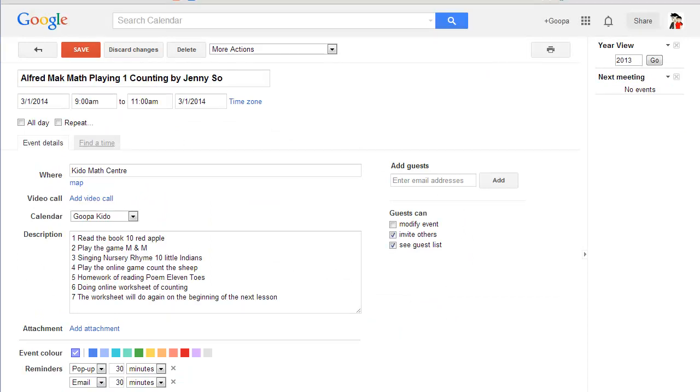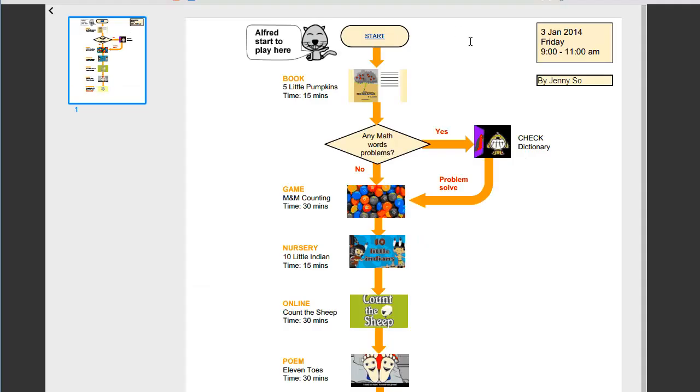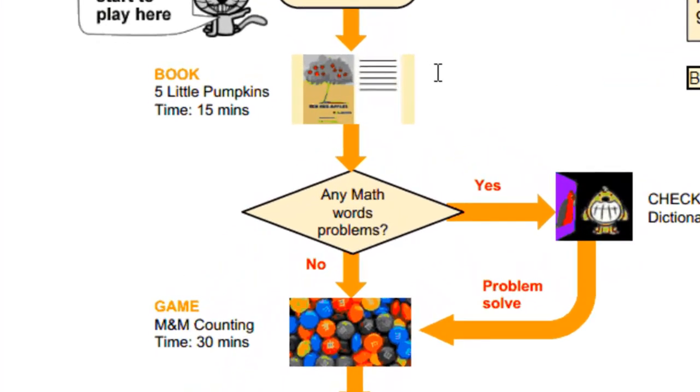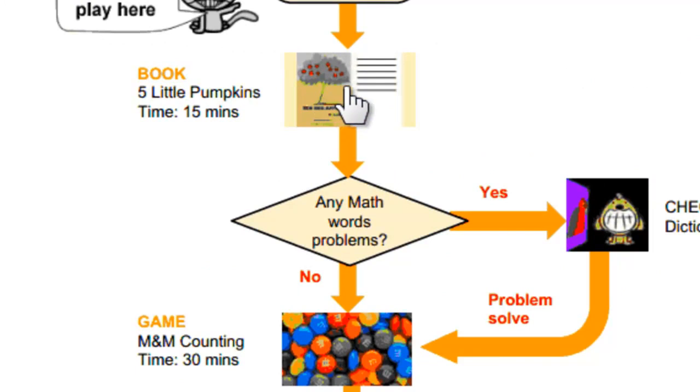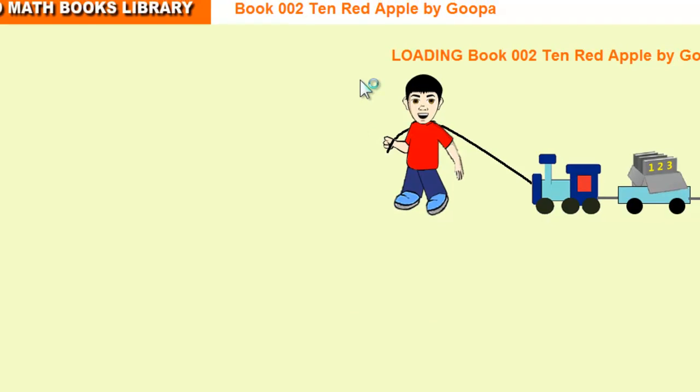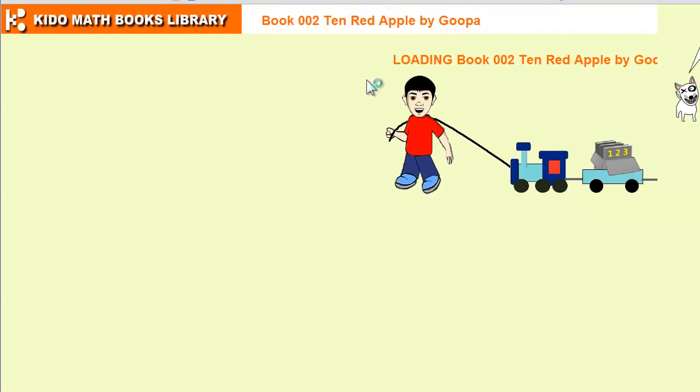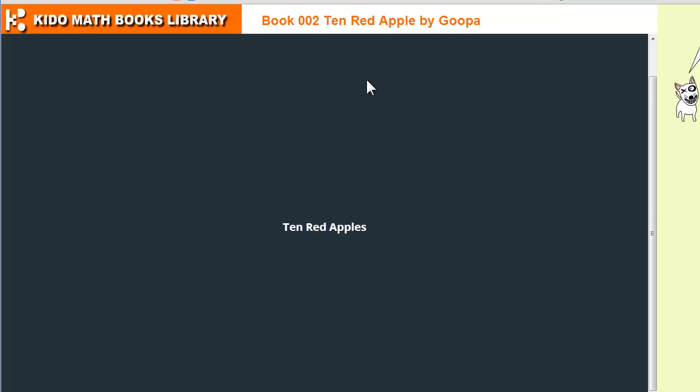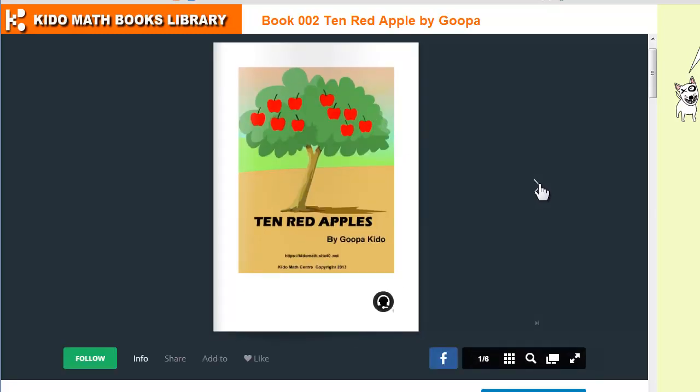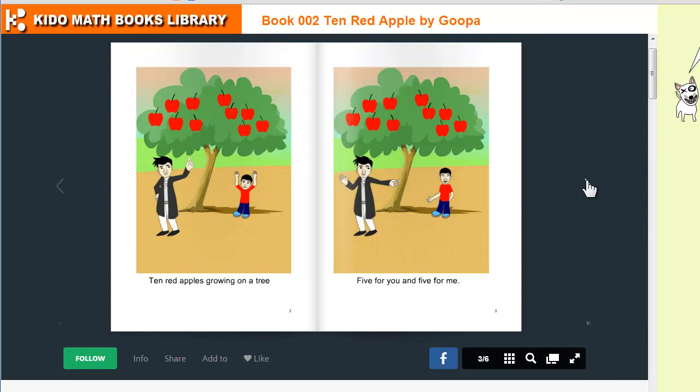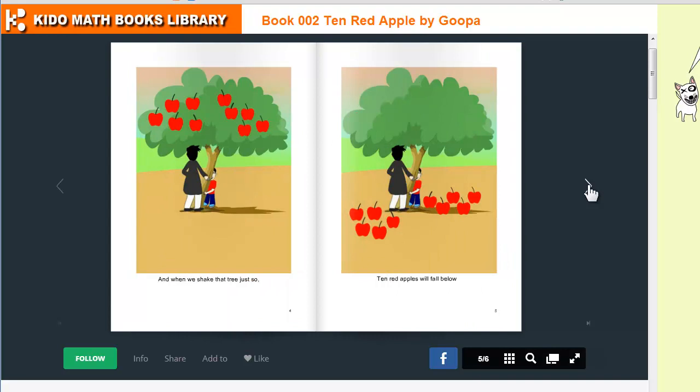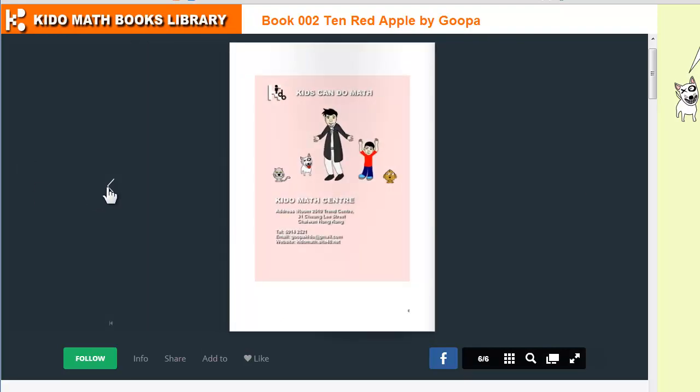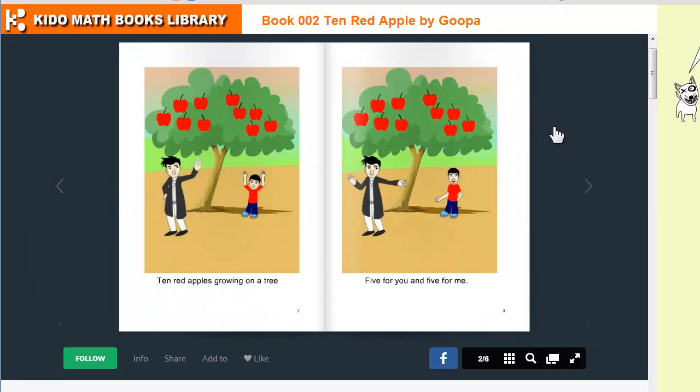Let's go back to the flowchart. As you can see, the first step we are going to do is reading the books. You could just click this. It's loading. This book is called Ten Red Apples. It's popping out. Flip it, and it's going to read it with audio.